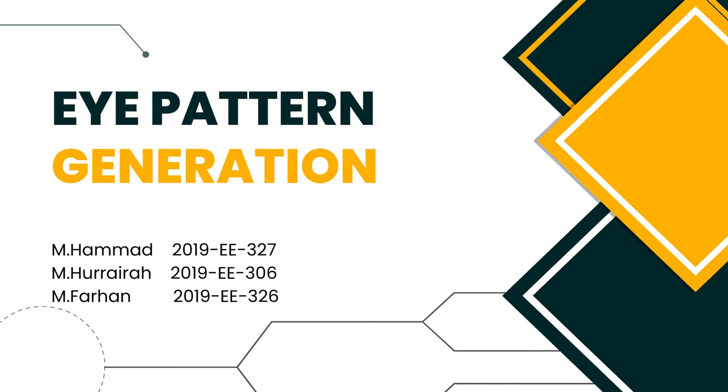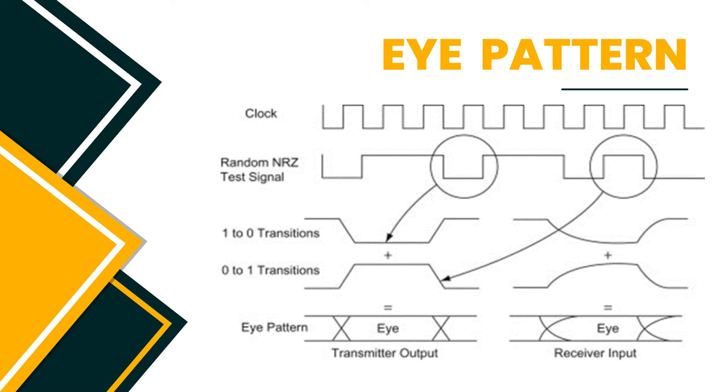First, we'll cover some theory of the eye diagram. What is an eye diagram and why is it used? An eye diagram, or eye pattern, is simply a graphical display of a serial data signal with respect to time, shown in a pattern that resembles an eye.